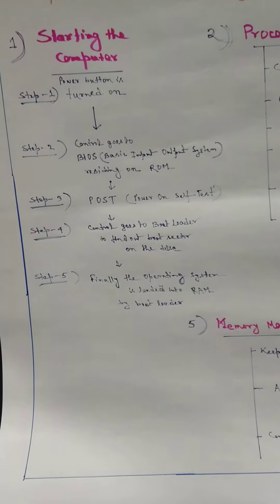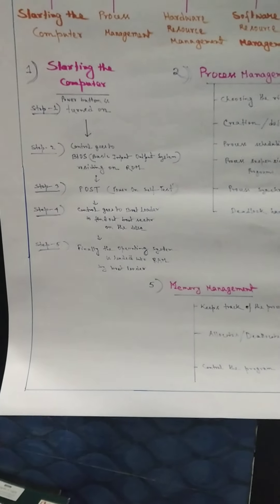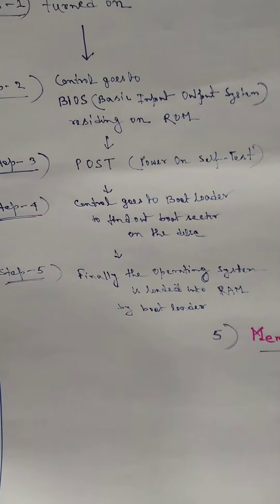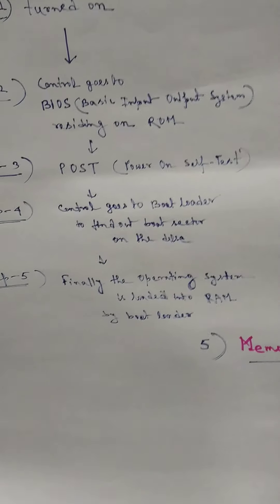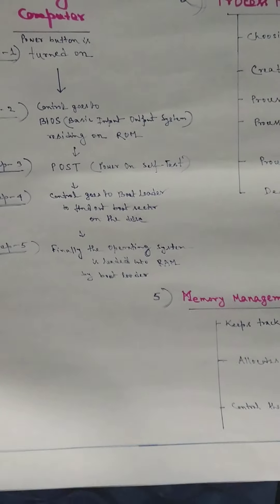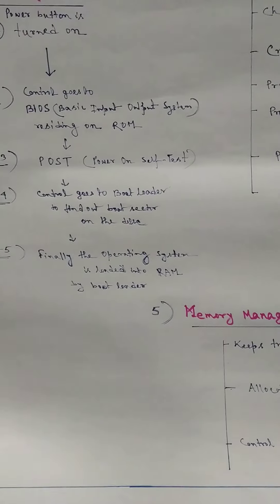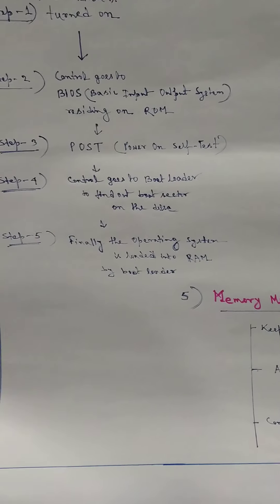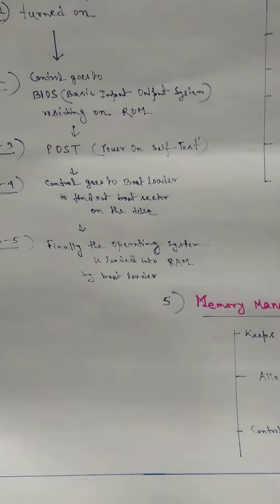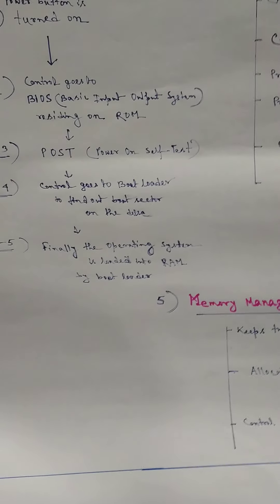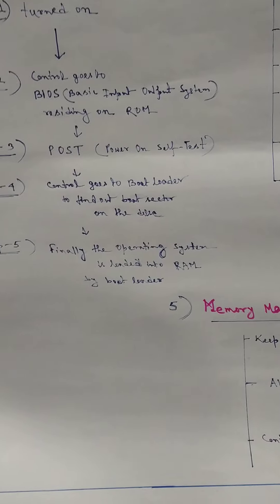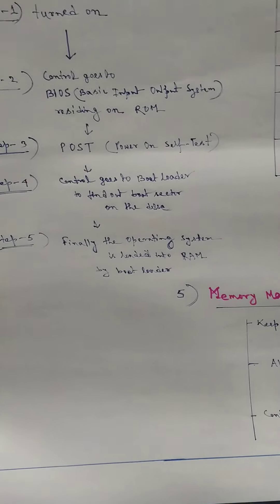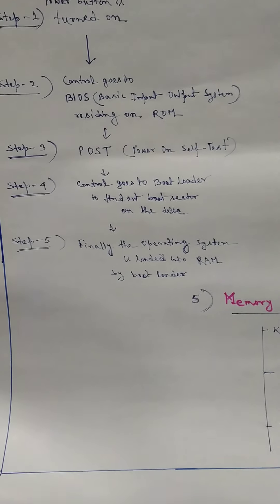If BIOS finds that everything is okay, it sends the control to the bootloader. The bootloader finds the boot sector on the disk. In the hard disk there is a boot sector — that is where the operating system is stored. Generally, we store the operating system in the C drive of the hard disk. The purpose of the bootloader is to load the operating system from the hard disk to RAM, that is, to the computer's memory.